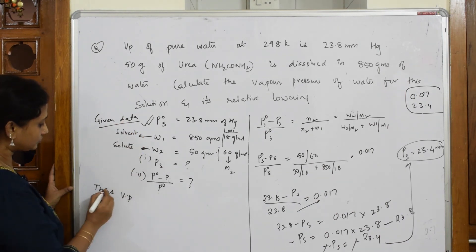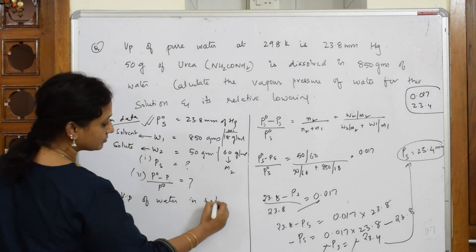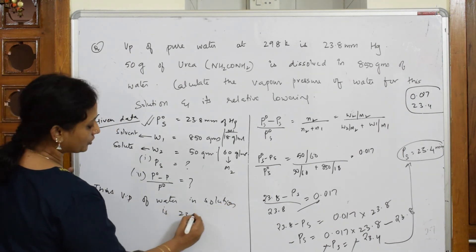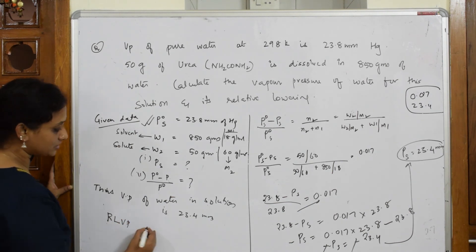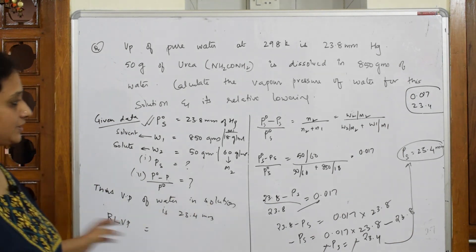You are going to write the answer. Thus, what should I write? Vapor pressure of water - vapor pressure of water in solution is 23.4 mm.